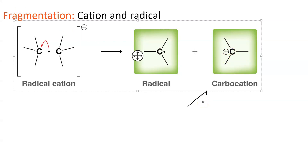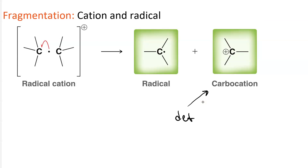It is the carbocations — the positively charged fragments — that are detected by the mass spectrometer.